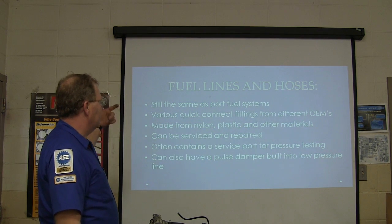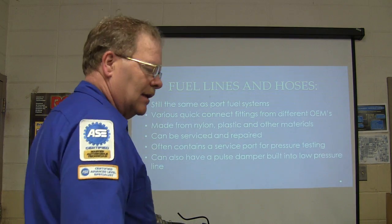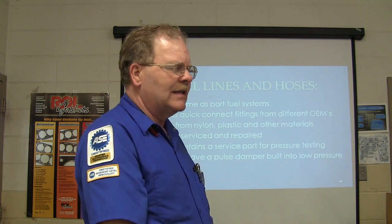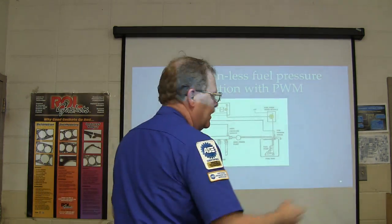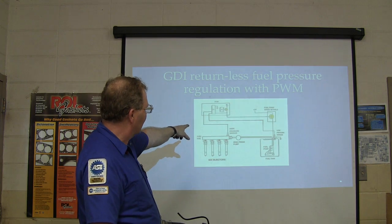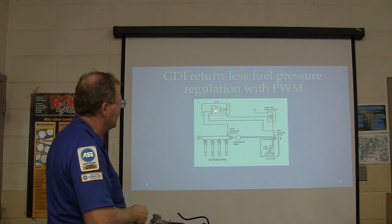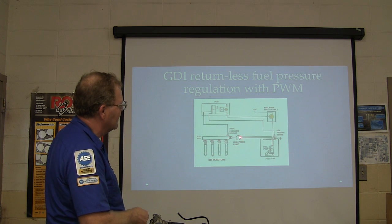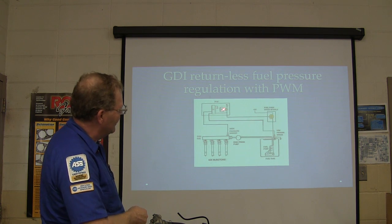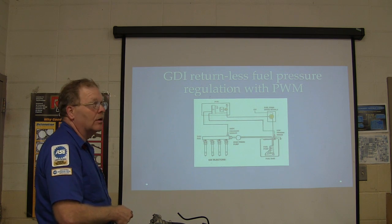The low-pressure system is the same as a port fuel system — various quick-connect fittings made from nylon, plastic, and other materials. With a fuel control module, you can use a scan tool to compare fuel pressure target to actual, see how much current is sent to the pump, and diagnose accordingly. GDI fuel pressure regulation on the return uses pulse-width modulation. There's a high-pressure sensor providing feedback so the system knows what fuel rail pressure is, and a low-pressure fuel sensor as well.